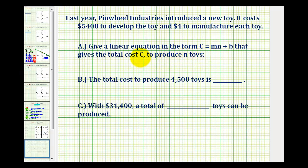So our equation is going to contain the variables C and N, which means we need to determine the value of M and the value of B. Notice that M is being multiplied by N, which is the number of toys produced, and B is a constant.